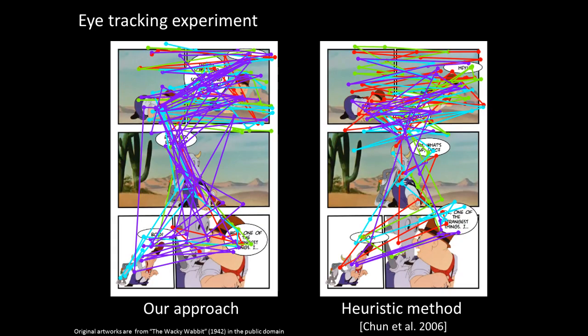We next show the effectiveness of our approach in directing viewer attention. We record eye movements on results from our method and the heuristic method. The eye movement paths are plotted with different colors representing different viewers. The consistency in eye movement is higher for our result, confirming that our approach is more successful in directing viewer attention. Please refer to our paper for quantitative analysis of eye movement consistency.